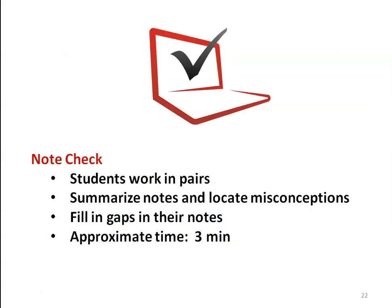Note check is an activity we sometimes do randomly, once a month or once a week. You can involve students by having them work in pairs — they summarize their notes, locate misconceptions, identify what is missing, and fill the gaps. They compare the notes of their neighbor, which takes approximately 3 to 5 minutes. Note check will help improve the writing habit of students.